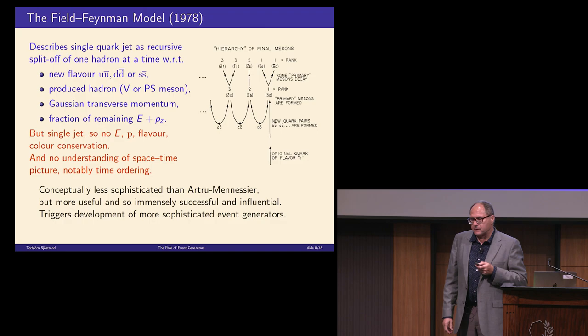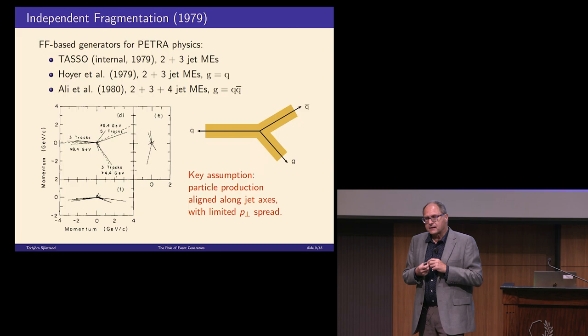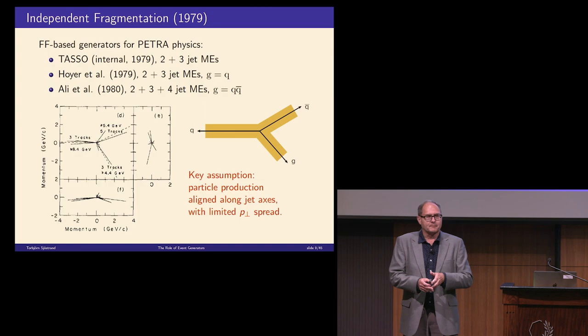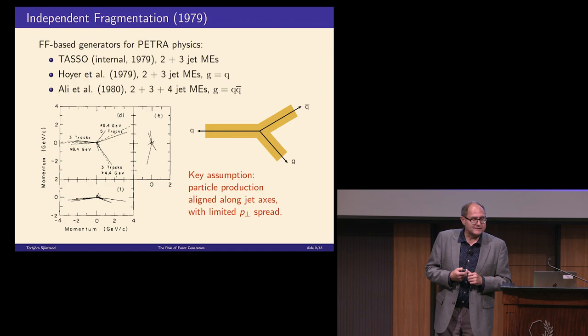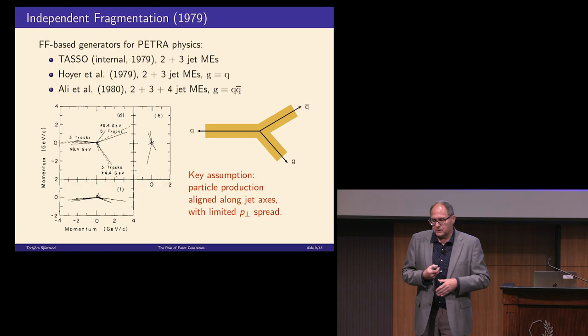It has the problem that it doesn't conserve energy momentum or flavor or color, because you can't do that from one single quark. Also, these people didn't really understand how to make sense of that from a space-time point of view, because particle production should begin in the middle, yet they were proposing a model that started at the end. There were problems with it, but it was very useful.